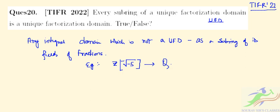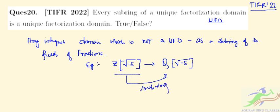That is Q(√-5), the set of rational numbers extended by √-5. So this Z[√-5] is a subring of its field of fractions. From this we can say that this statement is particularly false.